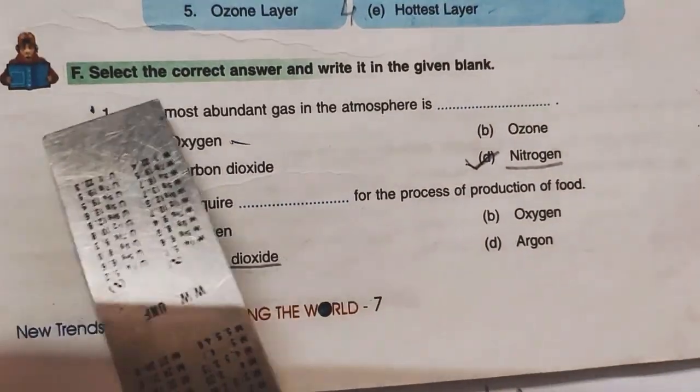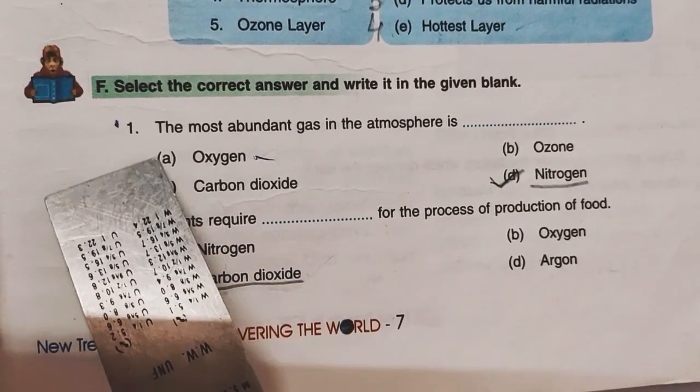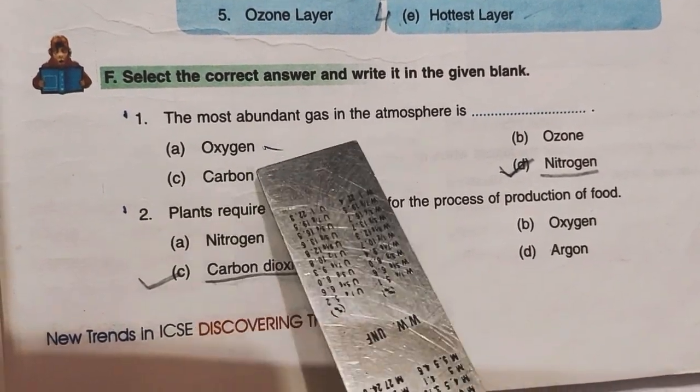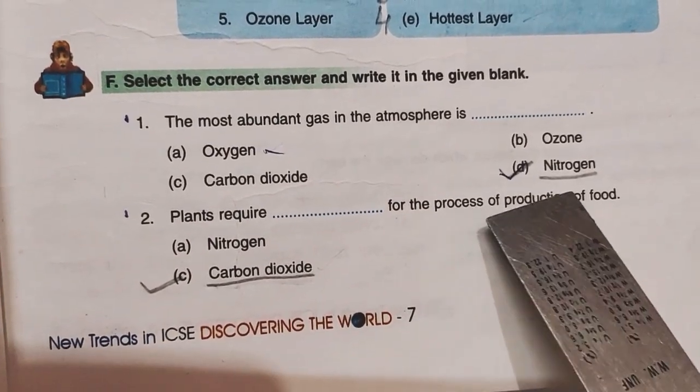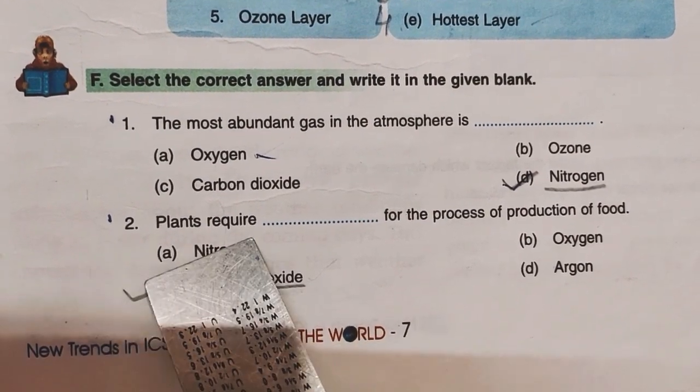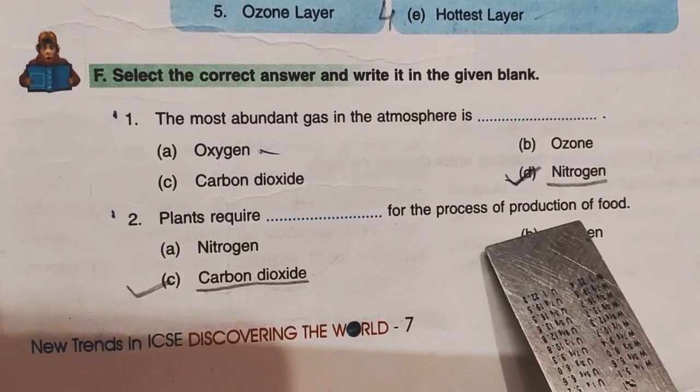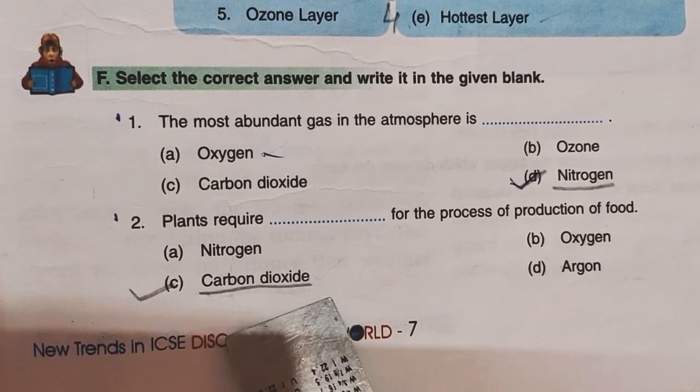Set F. Select the correct answer and write it in the given blank. Number 1, the most abundant gas in the atmosphere is, the correct answer is Nitrogen. Number 2, plants require gas for the process of production of food. The correct answer is Carbon Dioxide.